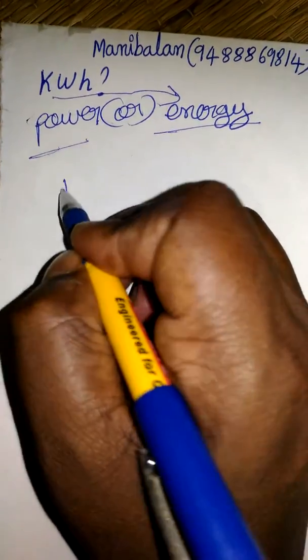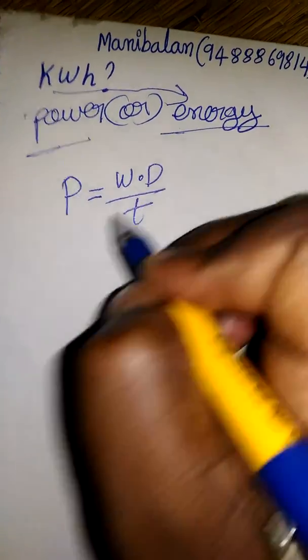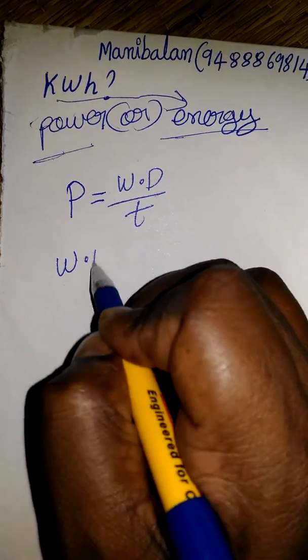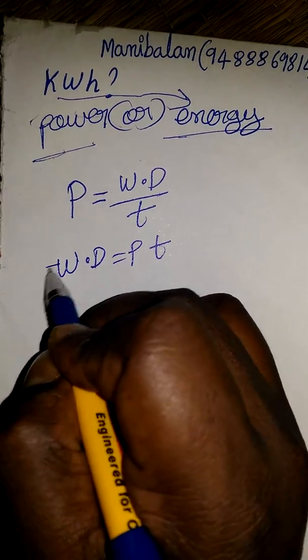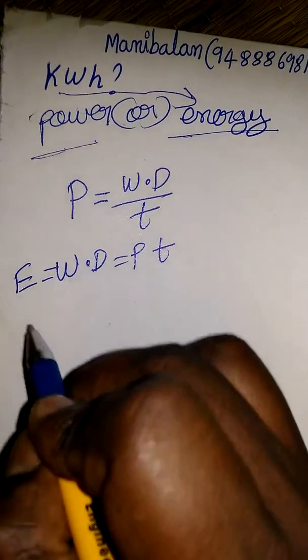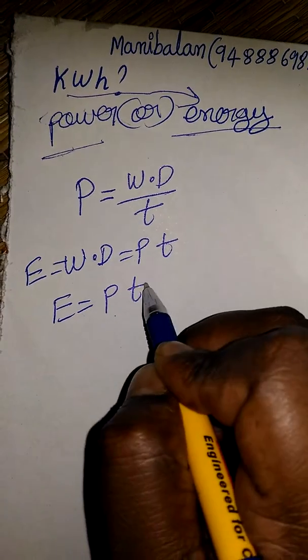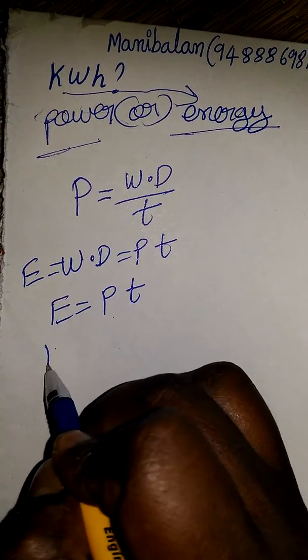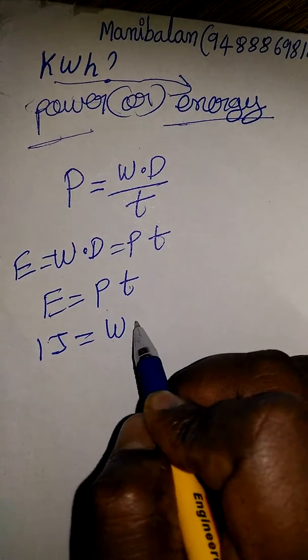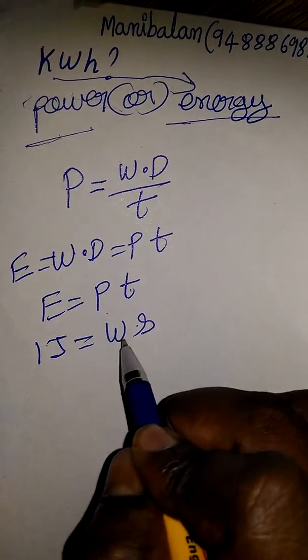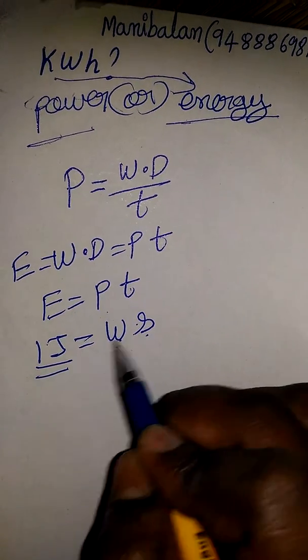So, as we already know, power is equal to work done by time. So work done is equal to power into time. Work done is also called energy, so energy is equal to power into time. The SI unit of energy is joule, and the SI unit of power is watt. The SI unit of time is the second, so watt-second is equal to joule. That is the representation of energy.